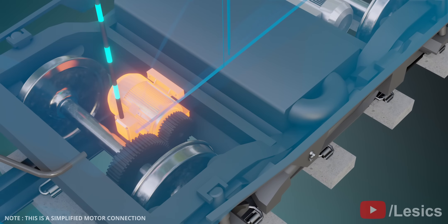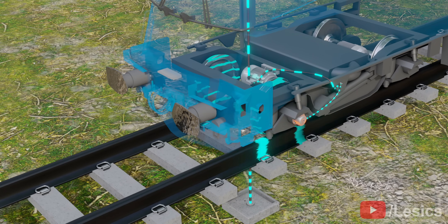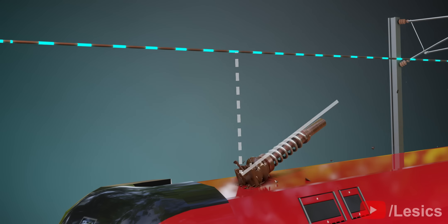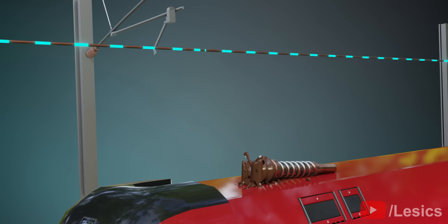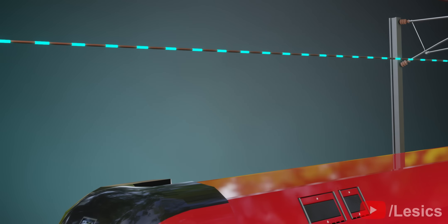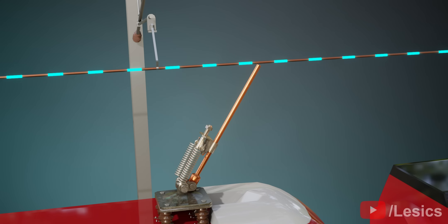In a pantograph, the circuit can easily be completed by connecting it to the ground through the wheels. However, this simple collector will easily fail due to the lack of lateral stability. To improve its stability, let's lean the rod in this direction. Rearranging the spring allows this collector to stay in contact with the line.